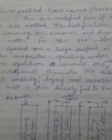The integrated continuous process is a modified form of the conventional VK tube method. The modification is aimed at removing monomer and oligomers from the melt. For this, the melt from the VK tube is spread over a large surface area in the form of a thin film.